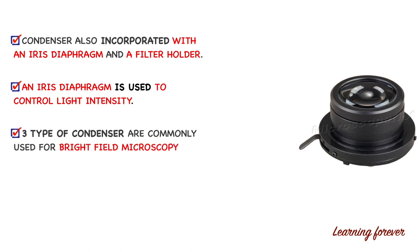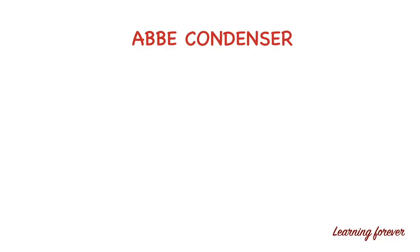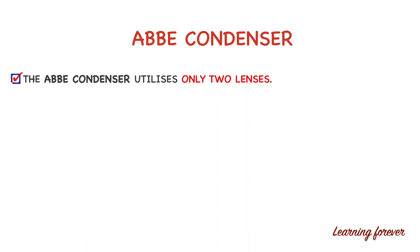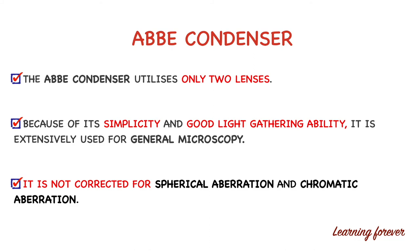There are three types of condenser used for bright field microscopy. First is the Abbe condenser, which uses only two lens systems. Due to its simplicity and good light-gathering ability, it is extensively used for general microscopy, though it is not corrected for spherical or chromatic aberration. Second is the variable focus condenser, which consists of two lens systems where the upper lens element is fixed and the lower lens element is flexible, allowing it to move up and down to achieve variable focus. This condenser is essentially similar to the Abbe condenser when the lower lens is raised to its top position.